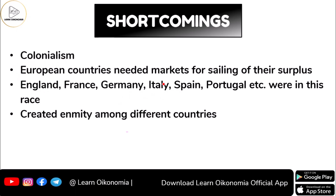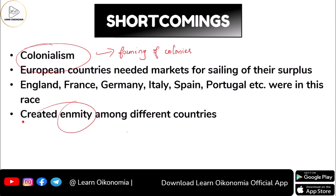This is one of the most important shortcomings. Following the idea of Mercantilism could give rise to something called colonialism — the forming of colonies and rule based on that. Many European countries needed markets to sell their surplus products, so nations like England, France, Germany, and Britain were competing in this race. The end result was that this created enmity among different nations, and there was conflict in the world as a result of the colonialism and competition from mercantilist ideas.